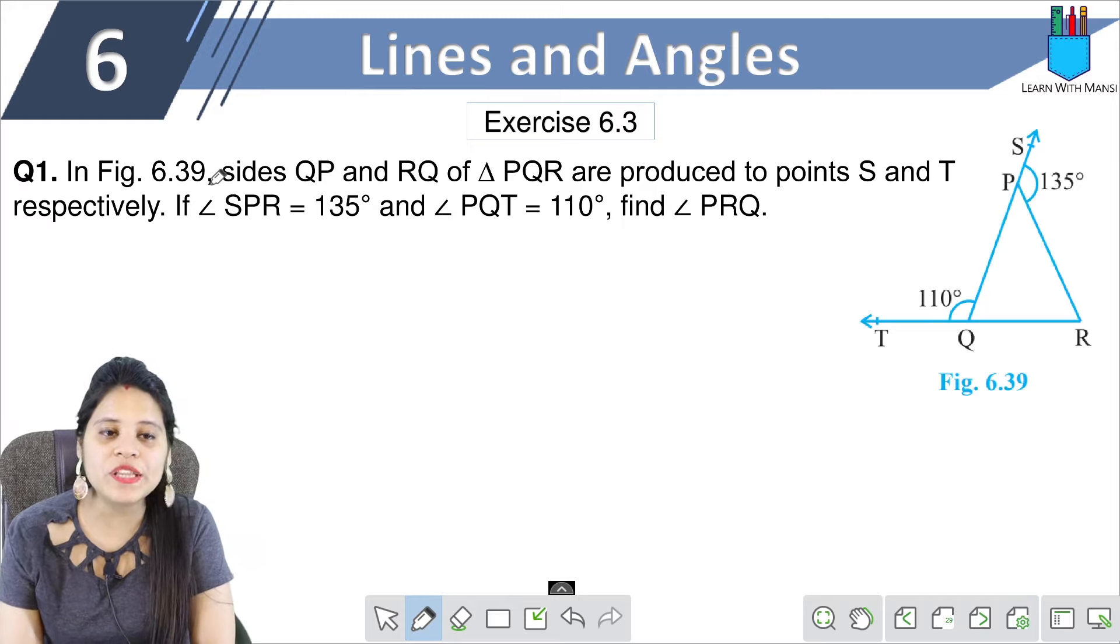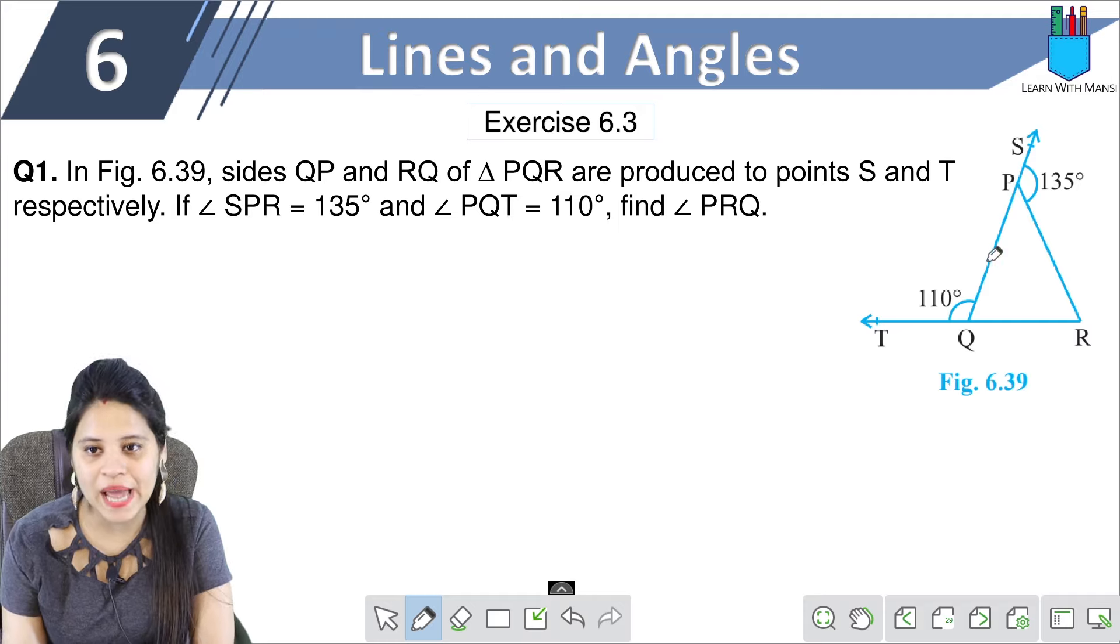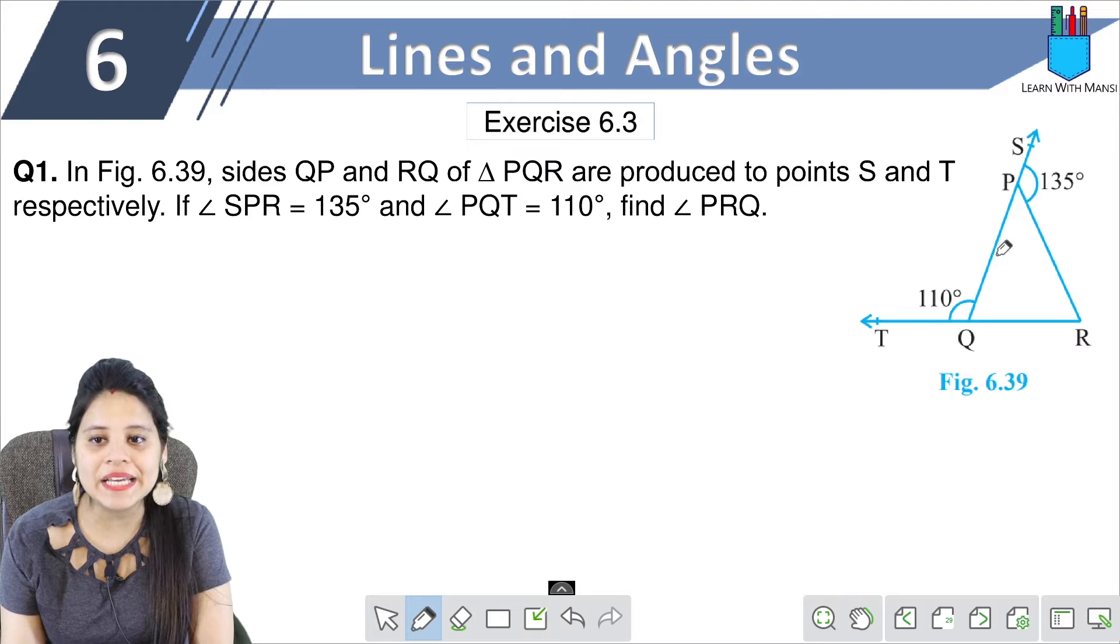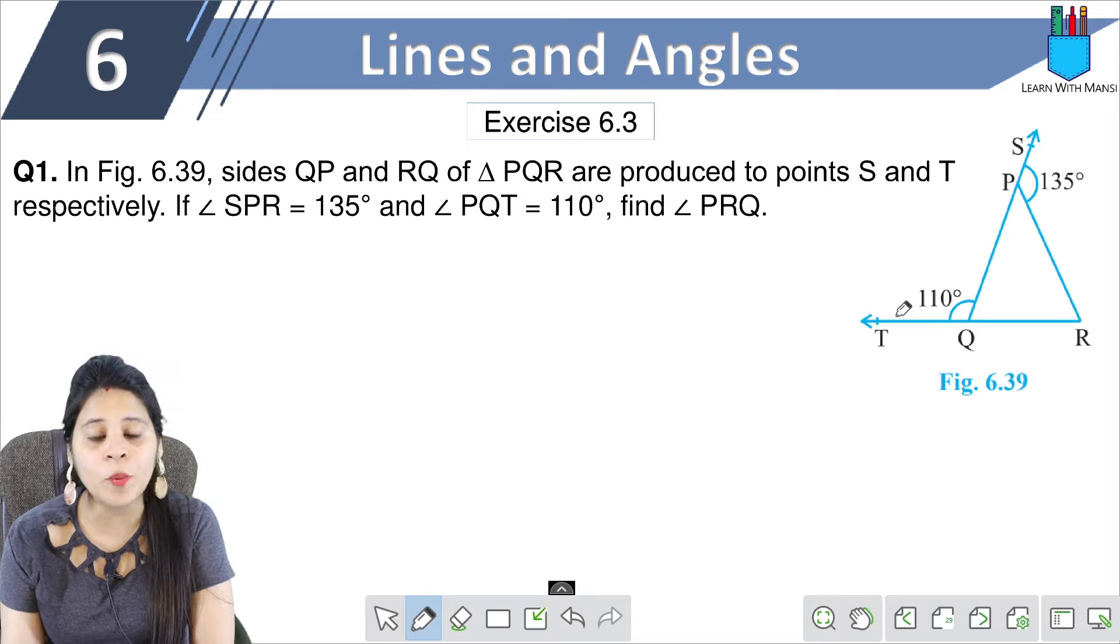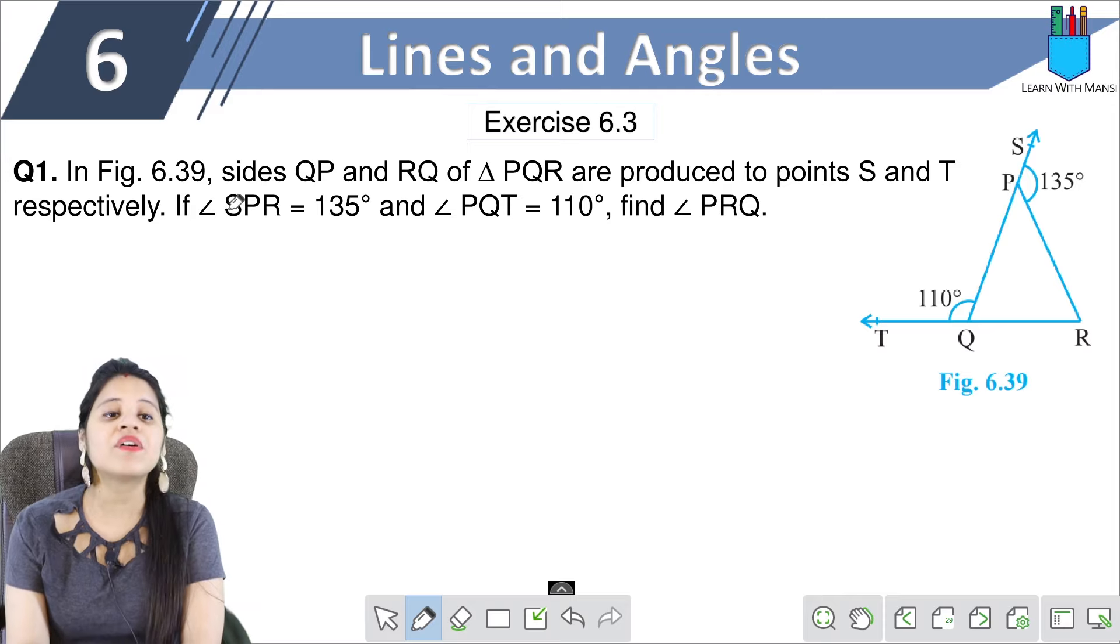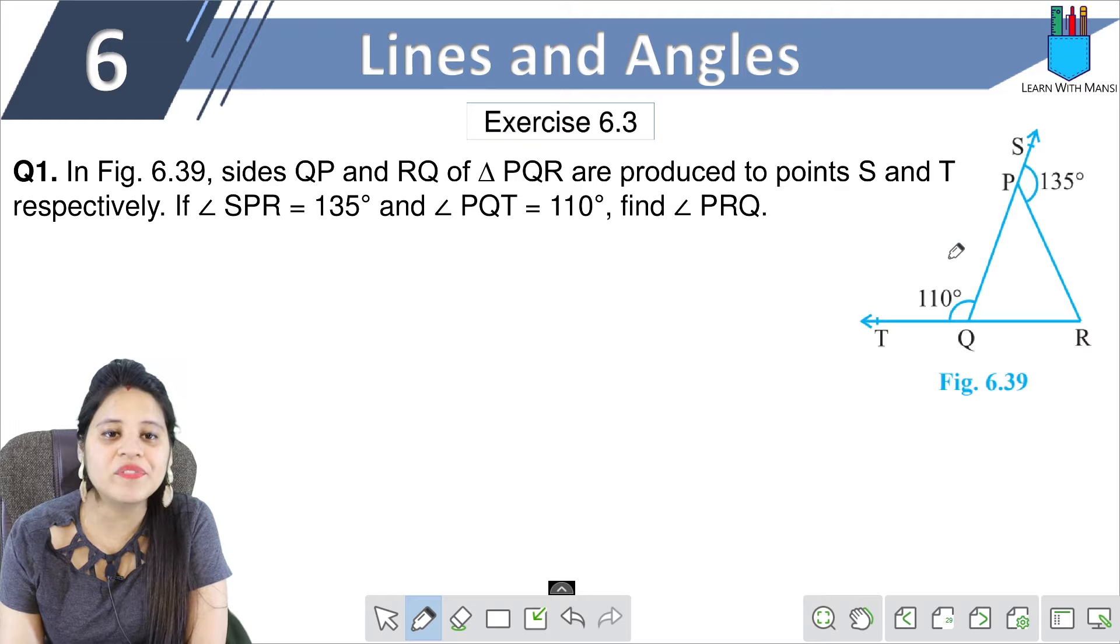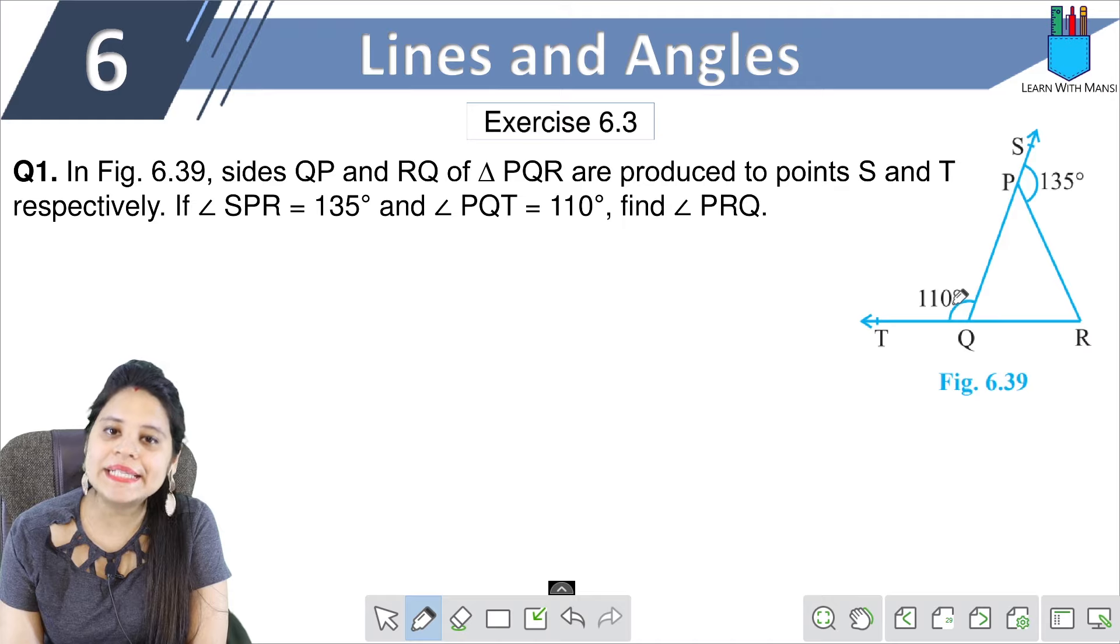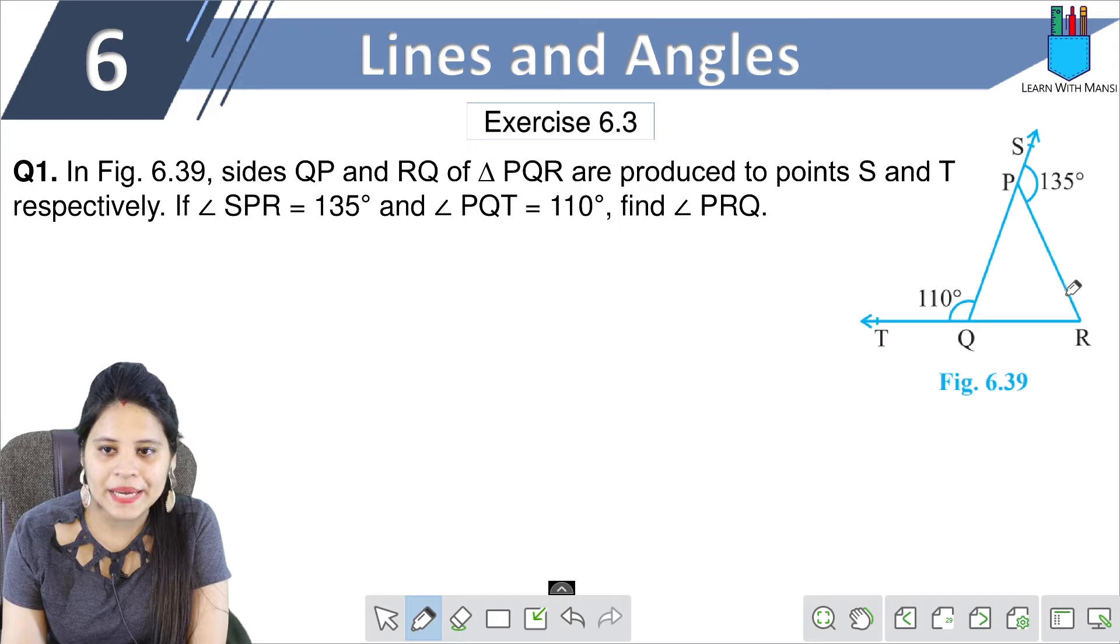In figure 6.39, we have sides QP and RQ of triangle PQR that have been produced to points S and T respectively. If angle SPR is 135 degrees and angle PQT is 110 degrees, find angle PRQ. So we will find this angle.